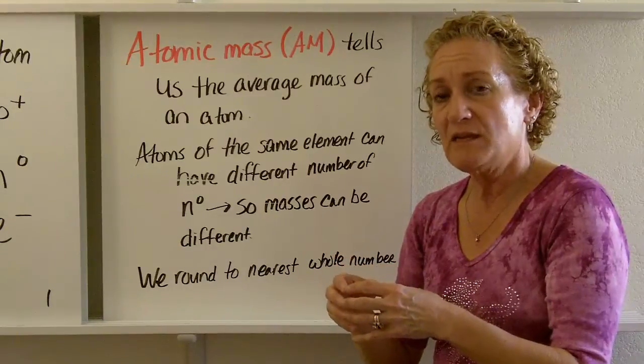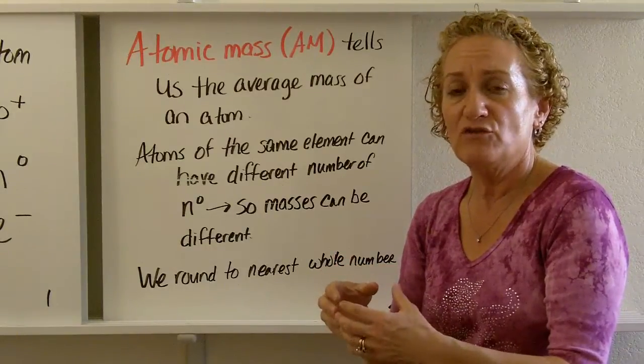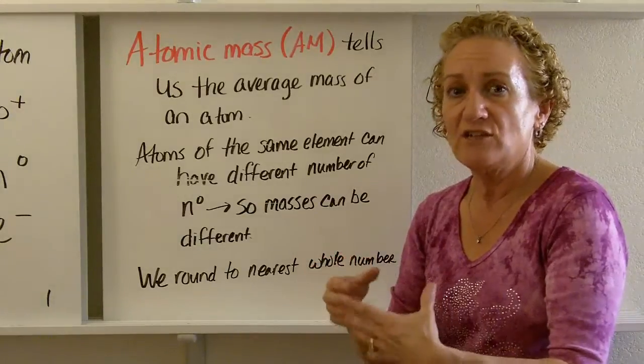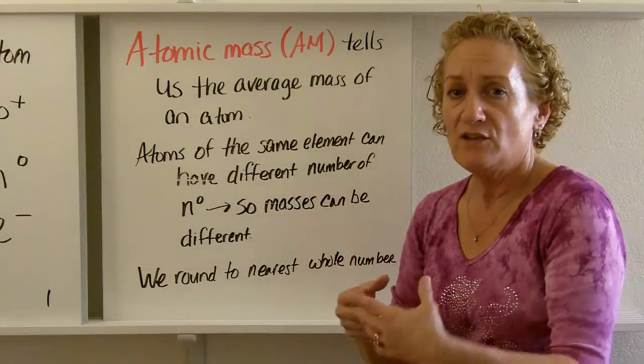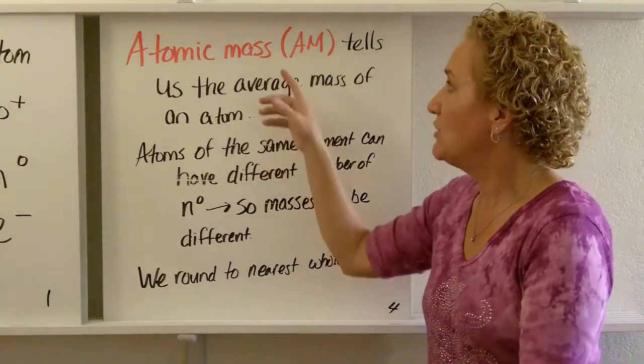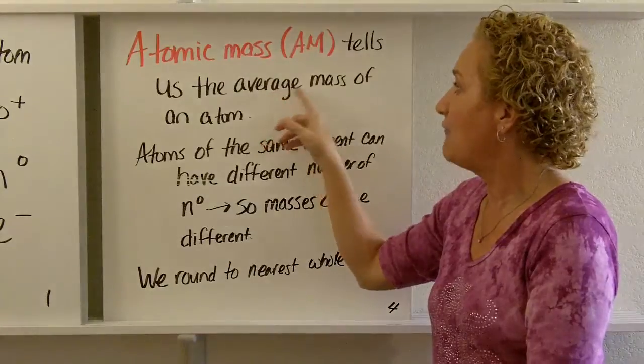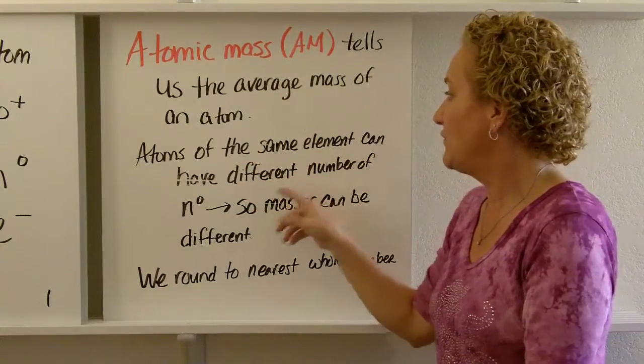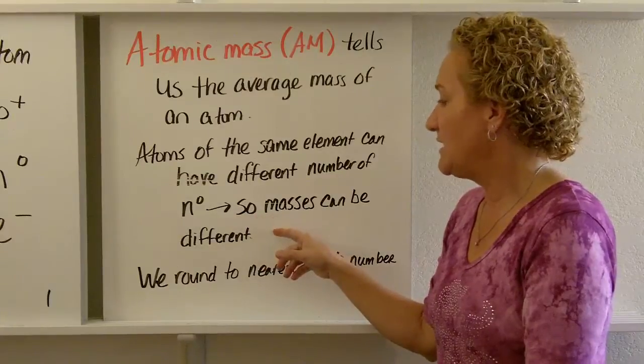Now the reason it's a decimal is because atoms can have different number of neutrons. Chlorine atoms can have different number of neutrons. They don't all have the same number of neutrons. Those are called isotopes, and we'll talk about that again later. But for right now, I want you to know the atomic mass tells us the average mass of an atom. Again, atoms of the same element can have different number of neutrons, so the masses can be different.